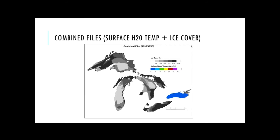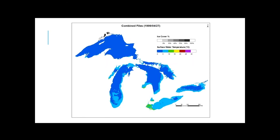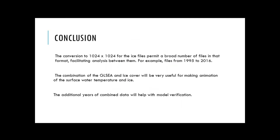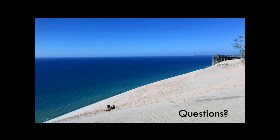This is my final result — the combined files. For the month of February, you can see a lot of ice. But if you change to April, you can see mostly surface water temperature with ice only close to the Black Bay area. In conclusion, the conversion to 1024 by 1024 permits a broad number of files in that format, facilitating analysis between them from 1995 to 2006. The combination of the GLSEA and ice cover will be very useful for making animations of surface water and ice, and the additional years of combined data will help with model verification. Does anyone have any questions?